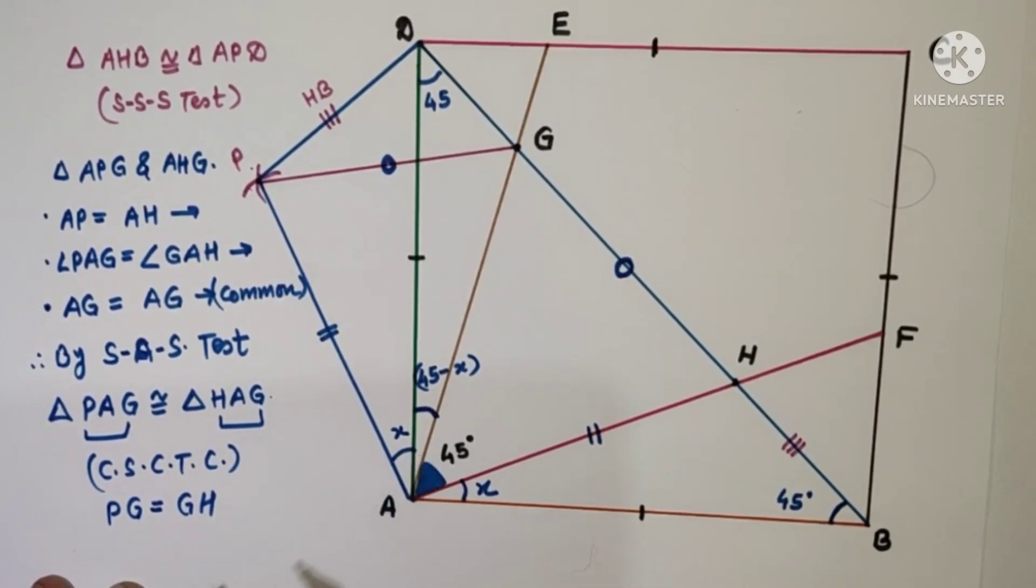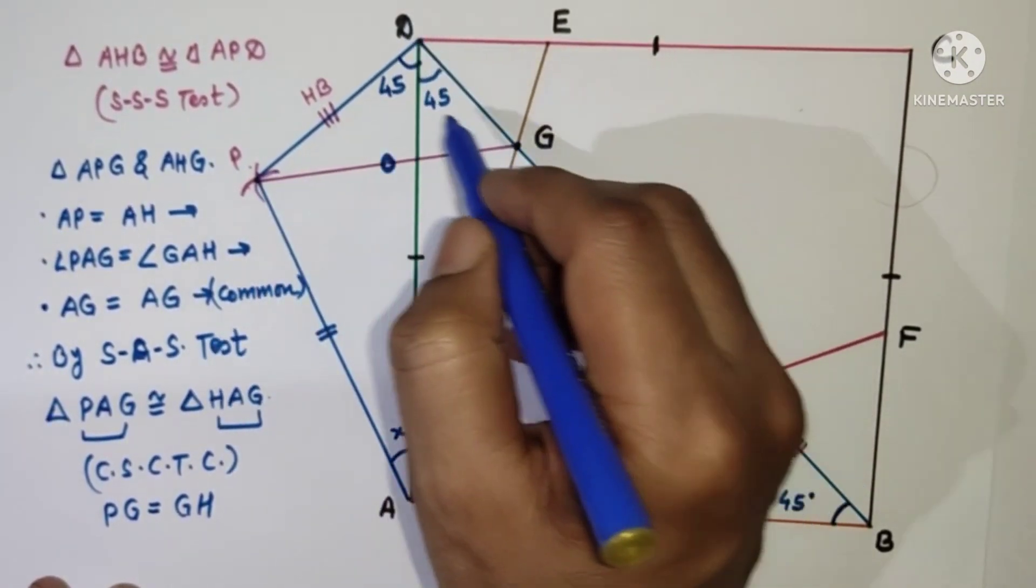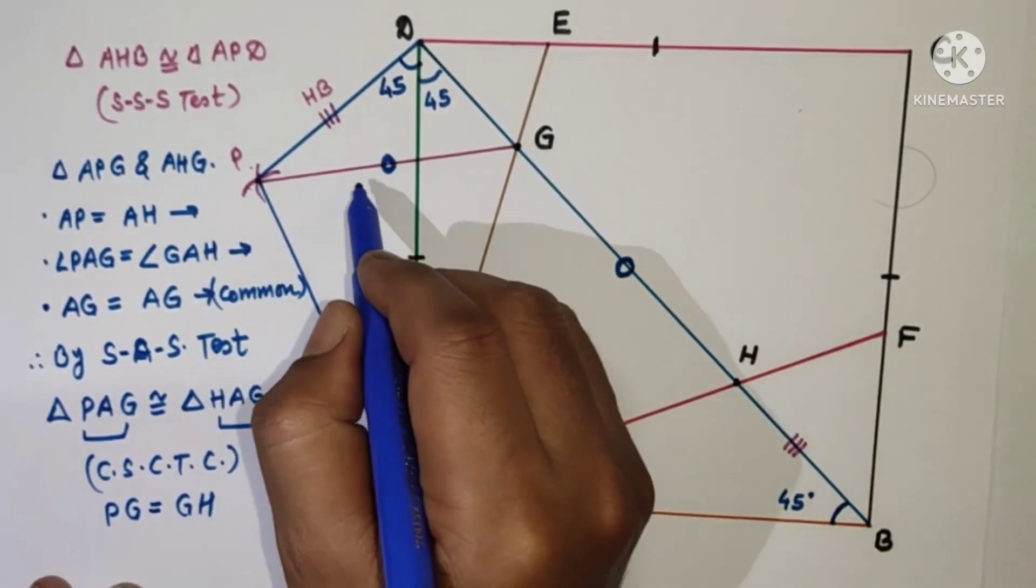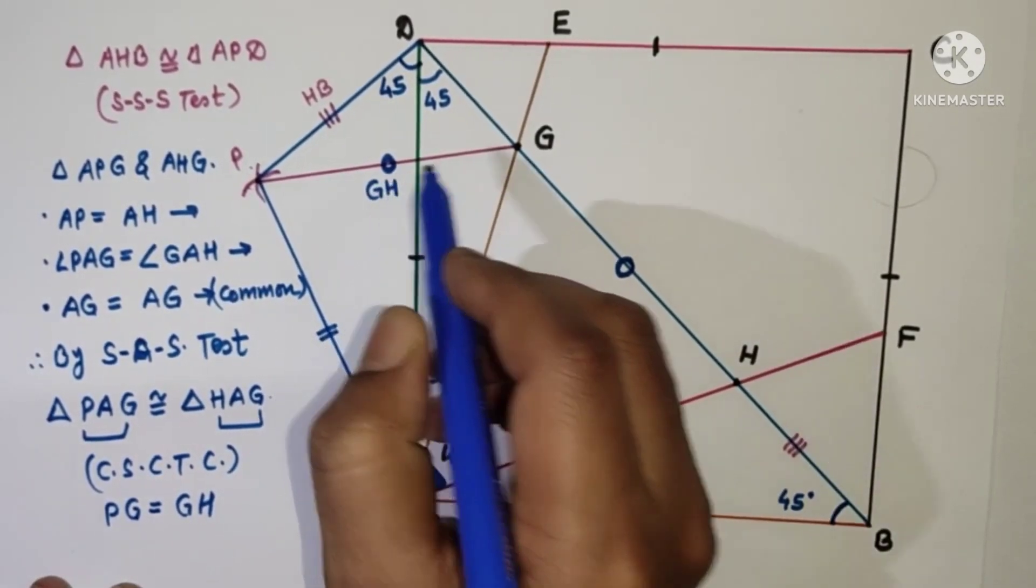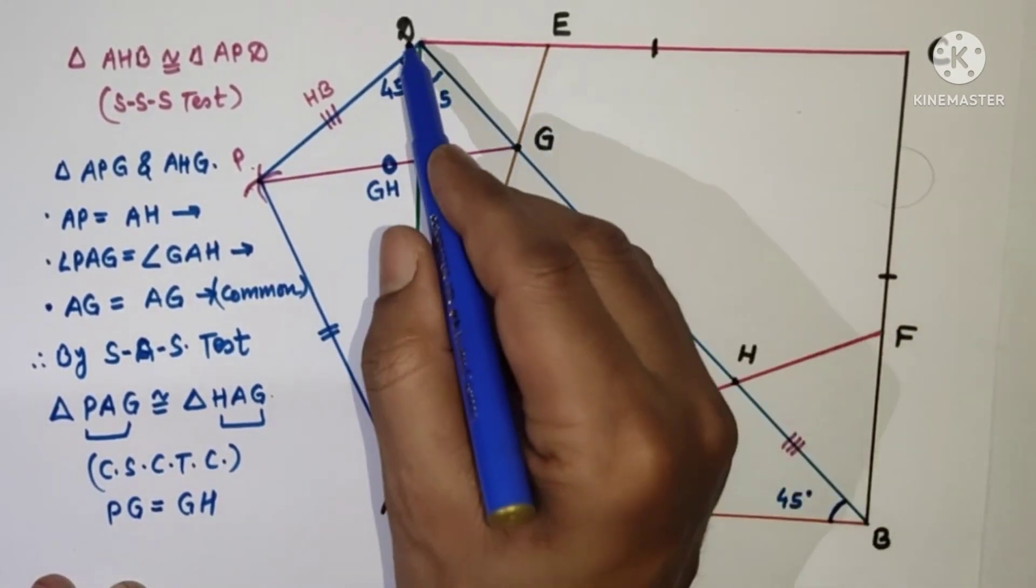Now this is X, this is X. This is 45, this is 45, this is 45. This whole angle will be 90. And this is equal to GH because these two are equal. And this is HB, this is DG.